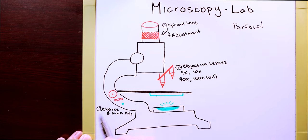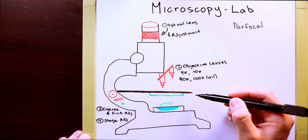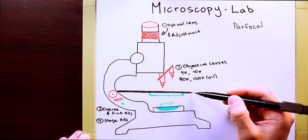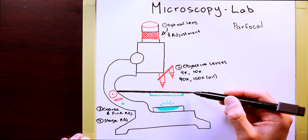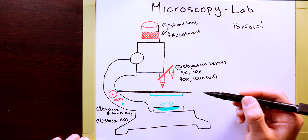Just below that, we have our stage adjustment. So the coarse and fine adjustment will allow you to control the stage in the vertical axis, while the stage adjustment will allow you to control it in the horizontal axis, allowing you to center your slides.